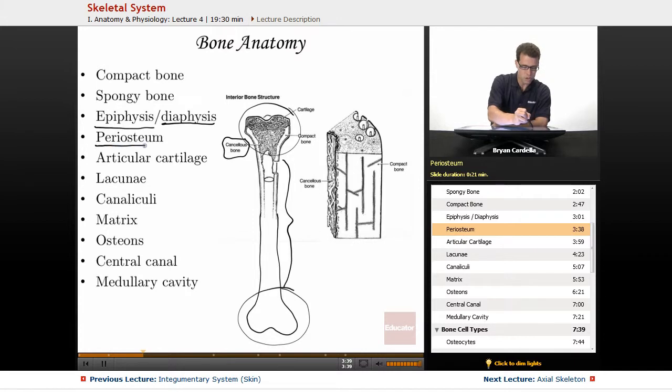The periosteum is a term for the outer layer of bone. And it's going to be most obvious in the section of the diaphysis. The outer layer that you're going to have ligaments being attached to, the part that you'd be holding if you actually had your hands around the diaphysis, you're touching the periosteum.